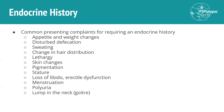In terms of your endocrine history, common presenting complaints that might require an endocrine history include appetite and weight changes, disturbed defecation, sweating, changes in hair distribution, lethargy, skin changes, pigmentation, stature, loss of libido, erectile dysfunction, menstruation, polyuria, and a lump in the neck. Metabolism has a big general effect on the body, so it's often useful to do a few screening questions from the endocrine history to rule in or rule out certain conditions, even when doing other types of histories.